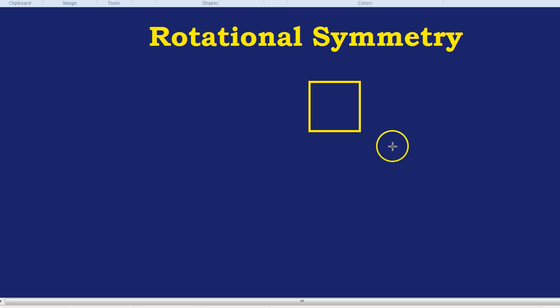But this is rotational symmetry. It's a bit different. It's still symmetry in the sense that we're looking at the same thing, the same shape. In lines of symmetry, it was the same shape reflected. This time, rotational symmetry is the same shape rotated.